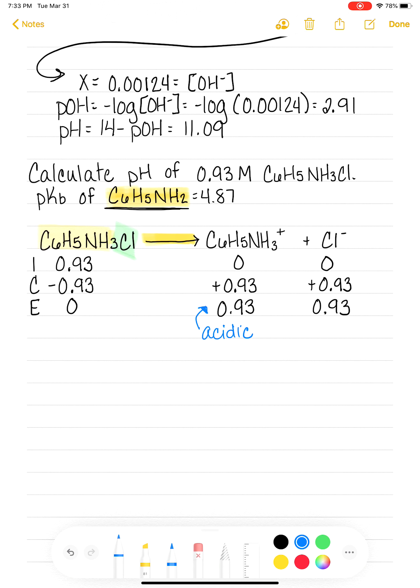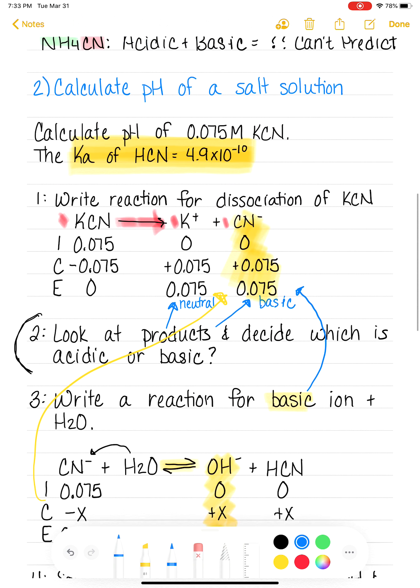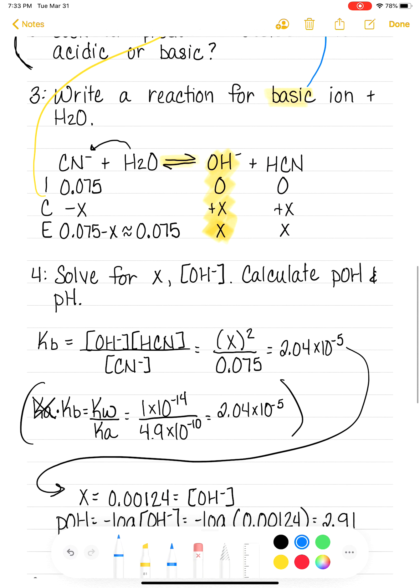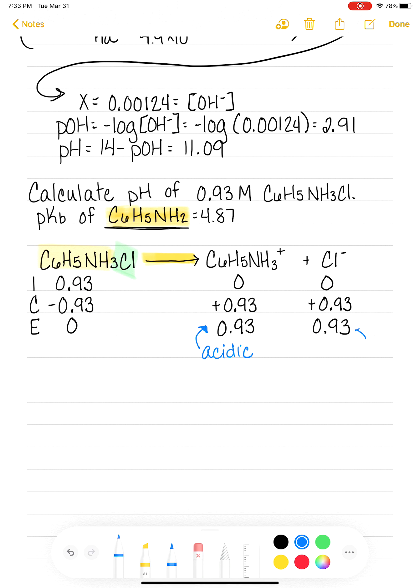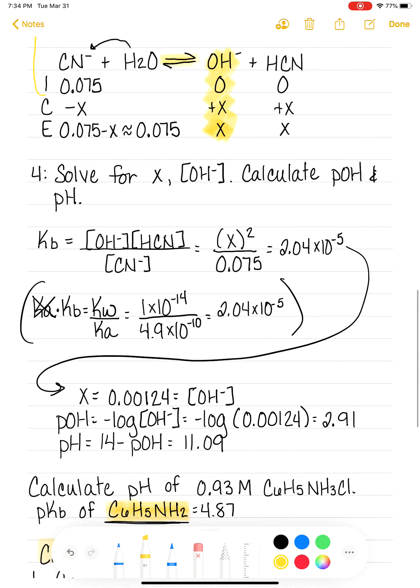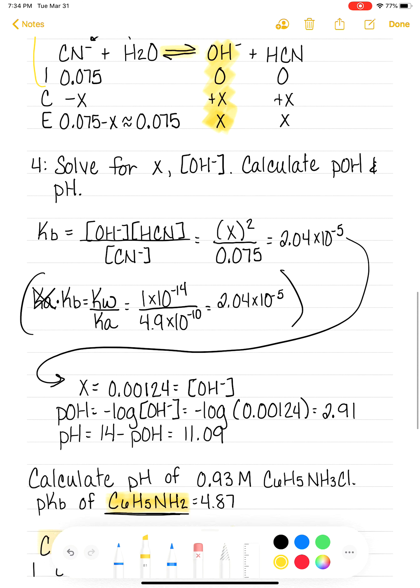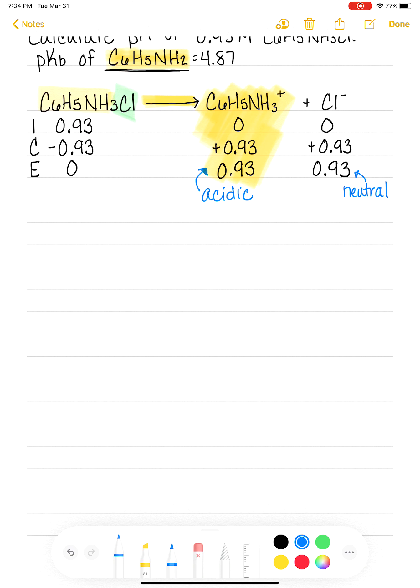What about our anion, chloride? The chloride ion is one of our neutral anions. So the chloride is neutral. And this tells us that the C6H5NH3, this is the component that is making the solution acidic. So that's what we need to focus on for the rest of this problem. Now that we've got that figured out, next thing we do, step 3, we're going to write a reaction for the acidic ion plus H2O.